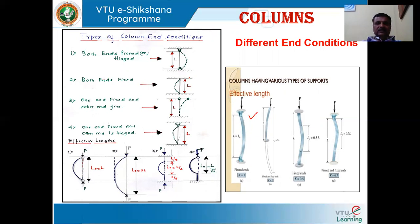Second is both ends fixed — you can see here both ends are fixed. The third condition is one end fixed and the other end is free to deflect. The fourth condition is one end fixed and the other end is hinged. Effective length is the length for which the column buckles.